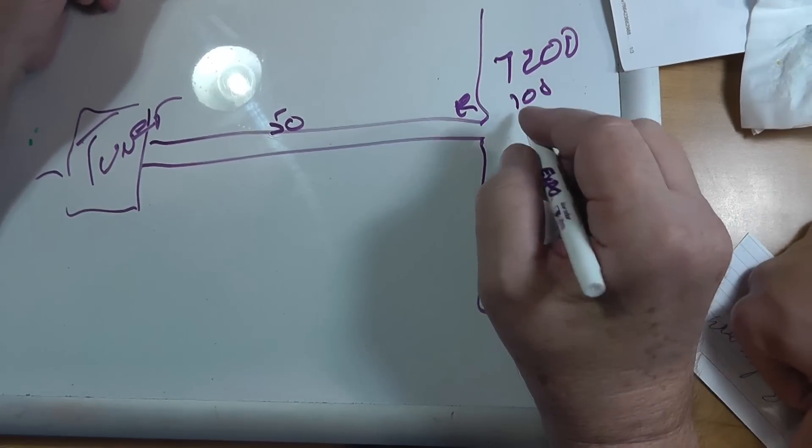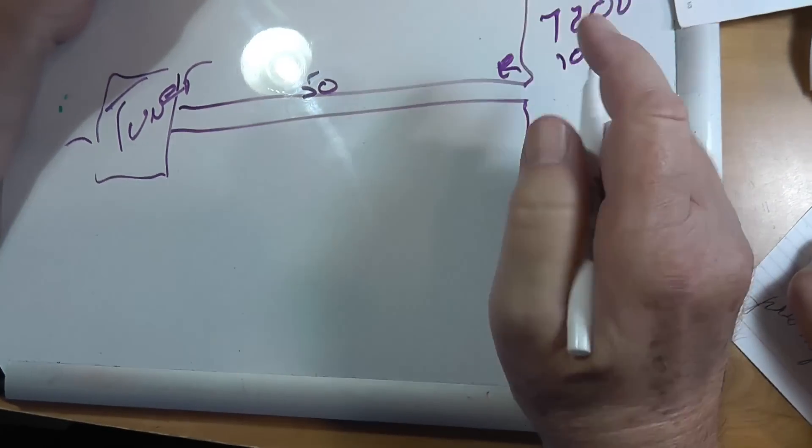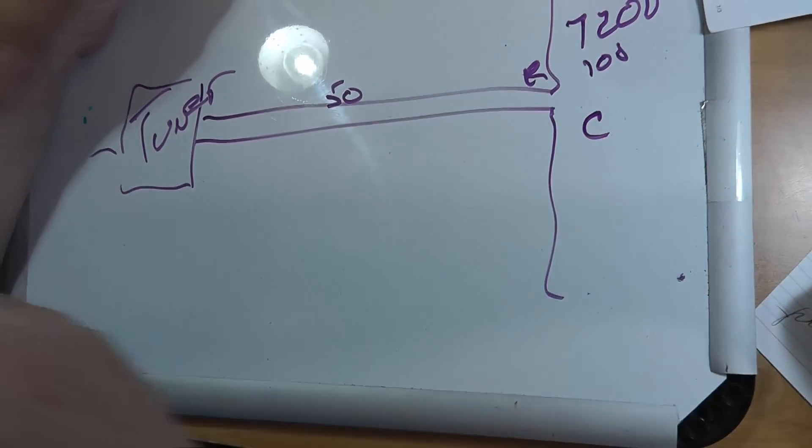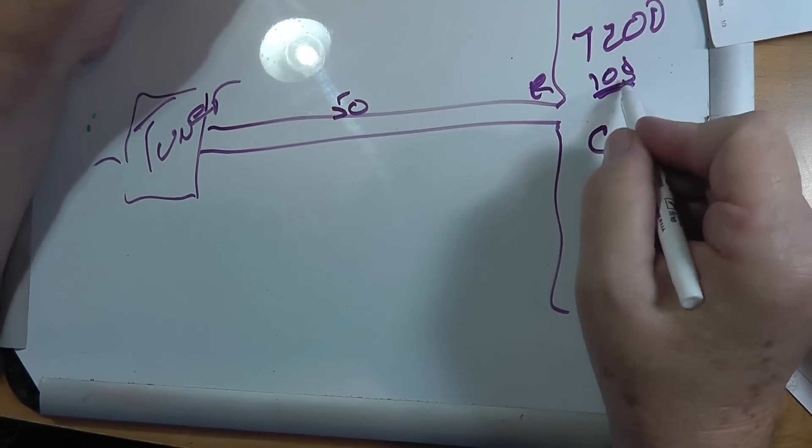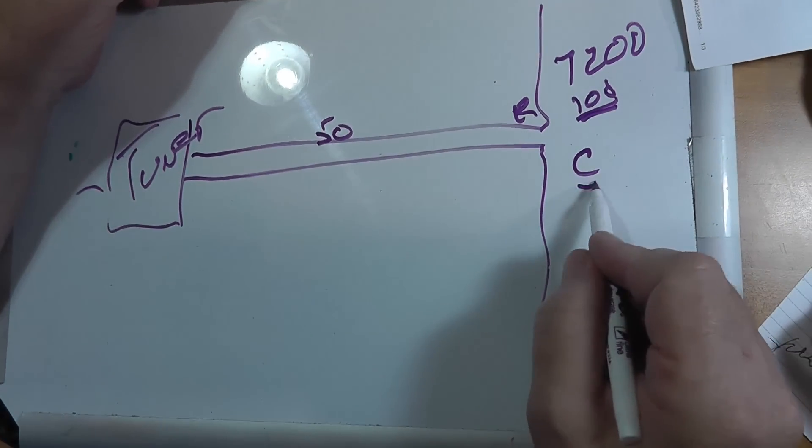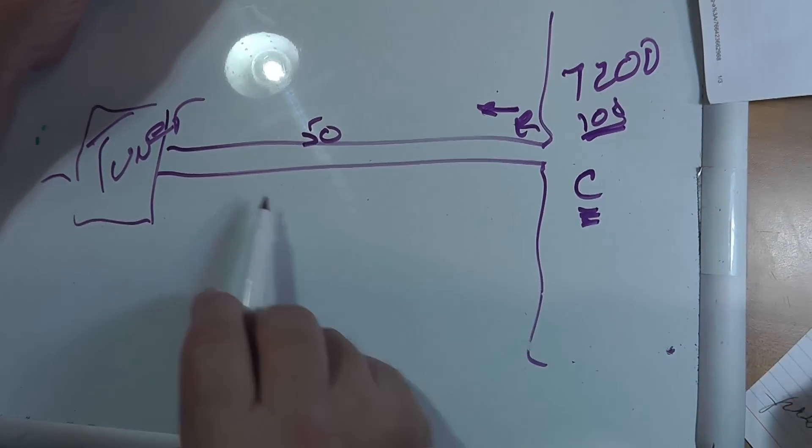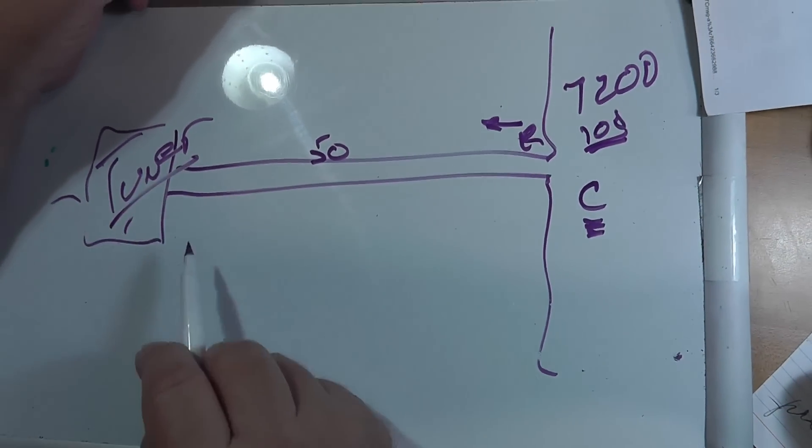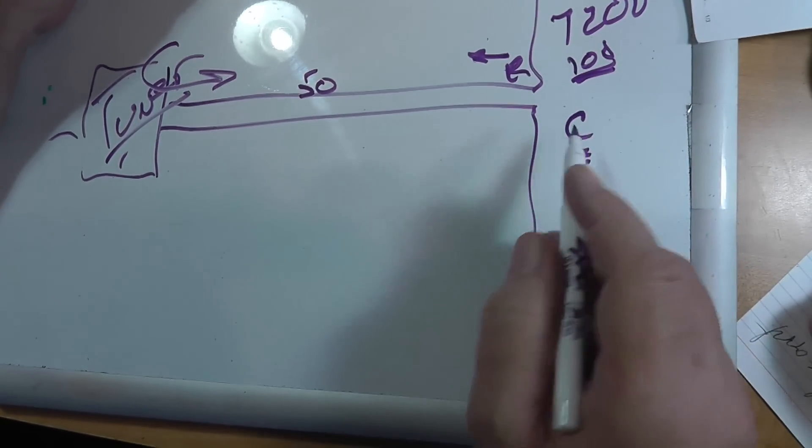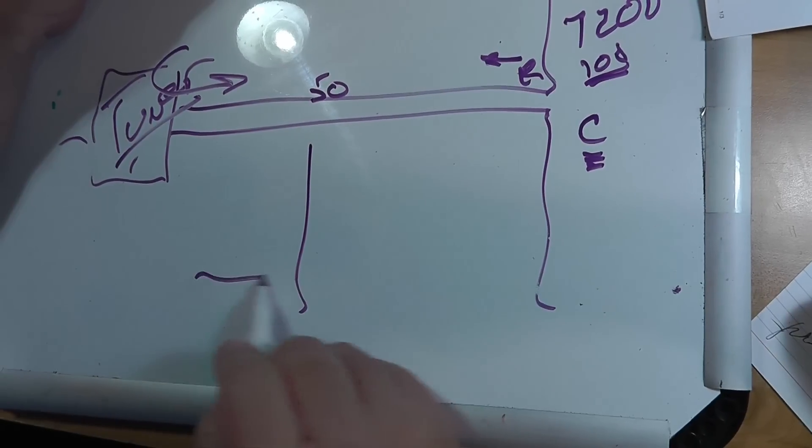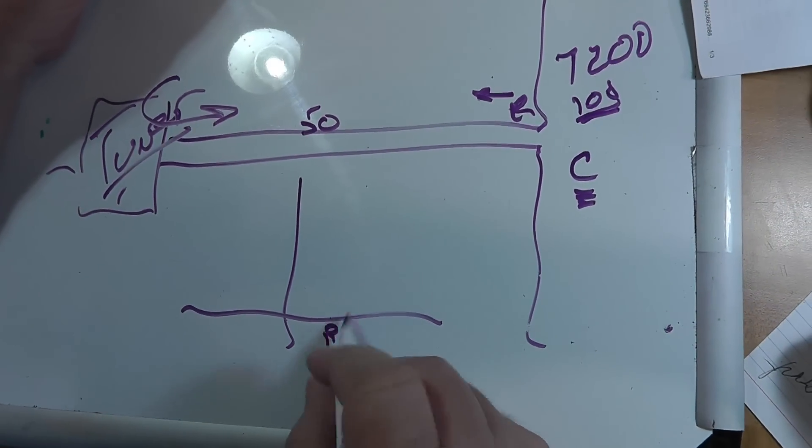Now, let us suppose that this antenna is too short. It is therefore capacitive. So some of this that's going to go back is going to be held for a little bit and then sent back over here to the tuner, which hopefully will turn it around and send it back here.